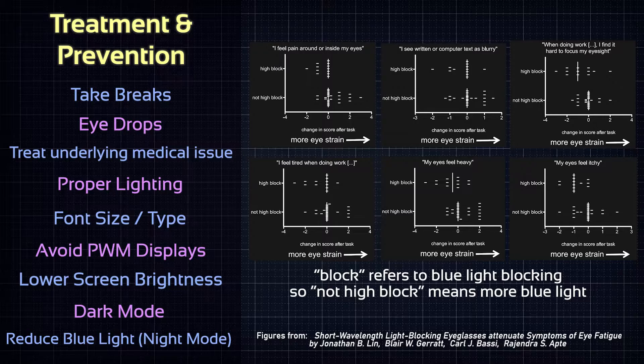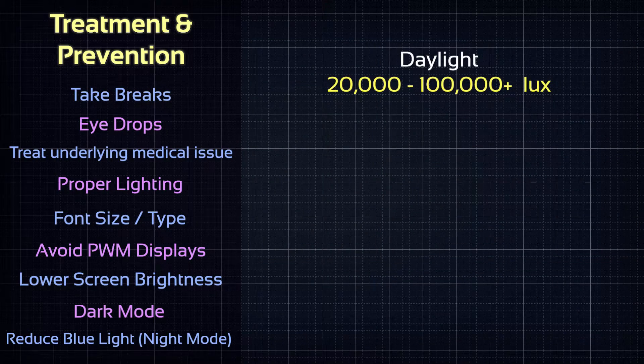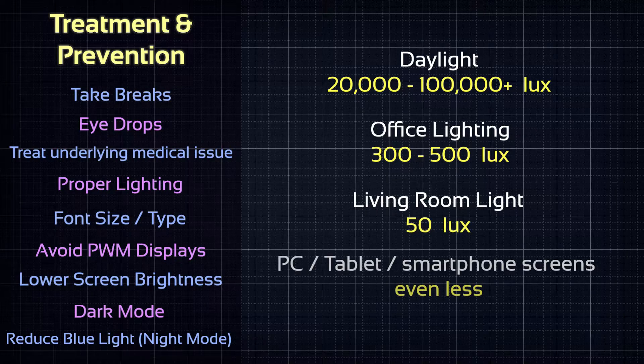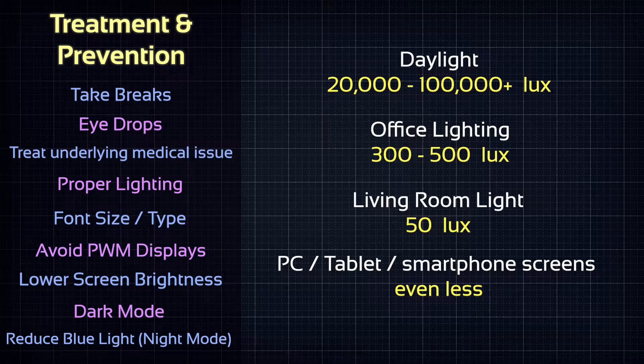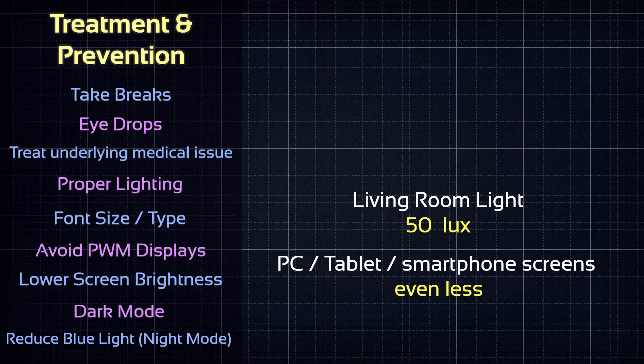It can even cause damages to your retina. However, the amount of light emitted by smartphones, tablets and computer displays is clearly below the amount of light our eyes would be subjected to during a sunny day. And people normally don't get blind by just going outside without sunglasses.